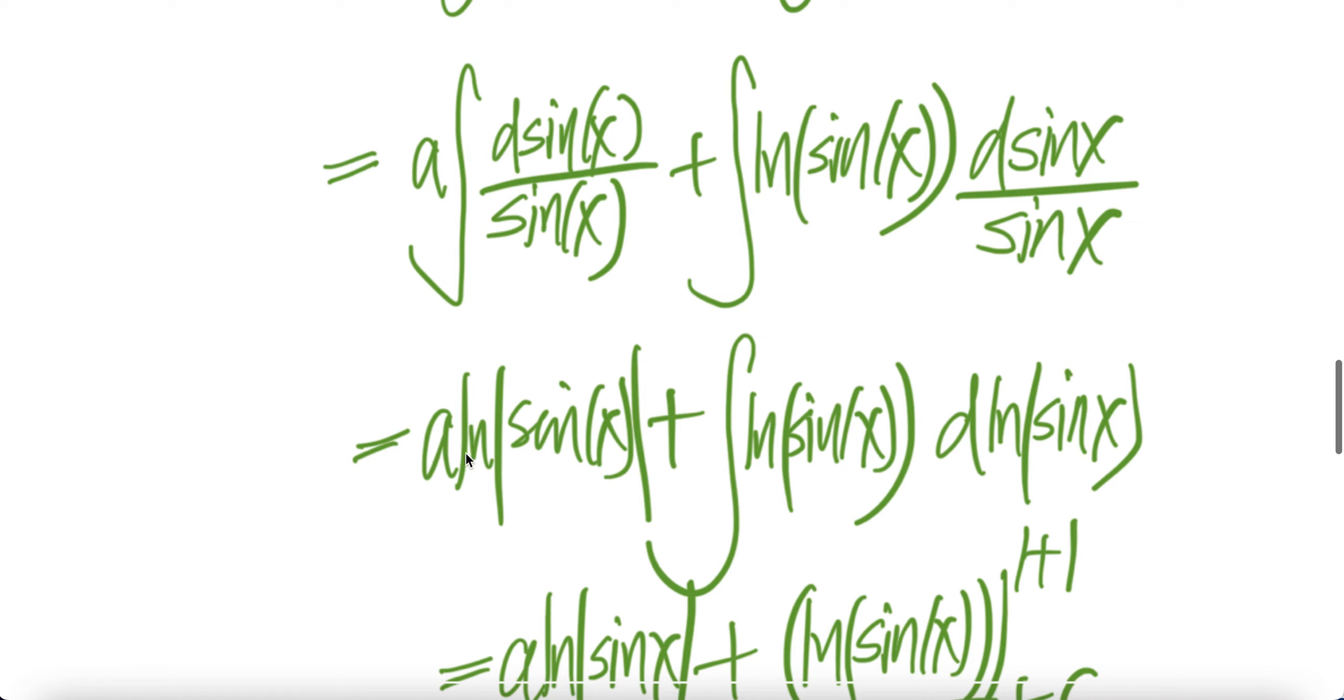Now integral of this is ln absolute sine x. Now you can move 1 over sine x into d sine x, you get the derivative of ln sine x is 1 over sine x d sine x. So this piece is integral of that.